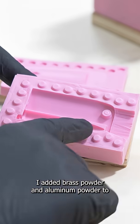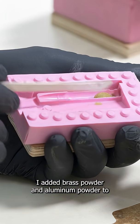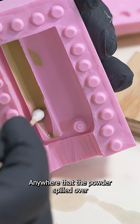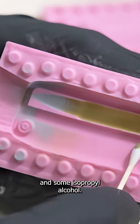For the fake bullet inside the magazine I added brass powder and aluminum powder to just the parts I wanted to be colored. Anywhere that the powder spilled over was cleaned up with a cotton swab and some isopropyl alcohol.